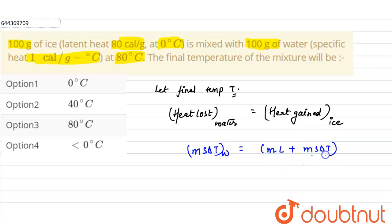So the mass of the water is given to us as 100 grams × specific heat of water is 1 calorie per gram per °C × change in temperature will be from 80 to final temperature T. This will be equal to: